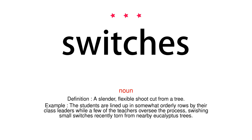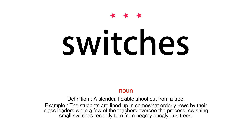Noun. Definition: A slender, flexible shoot cut from a tree. Example: The students are lined up in somewhat orderly rows by their class leaders while a few of the teachers oversee the process, swishing small switches recently torn from nearby eucalyptus trees.